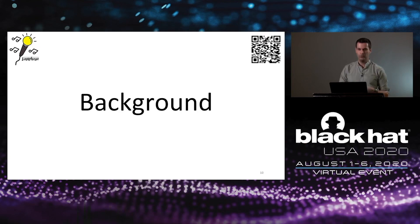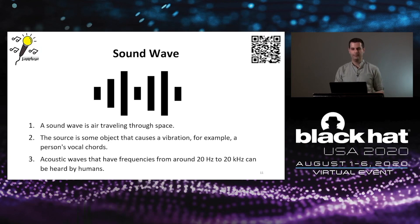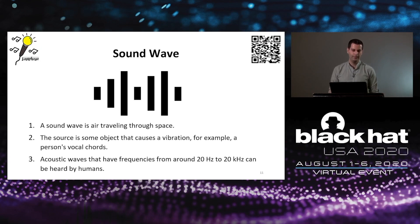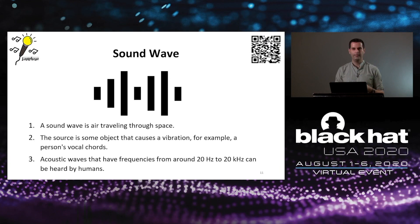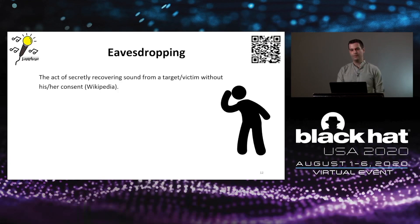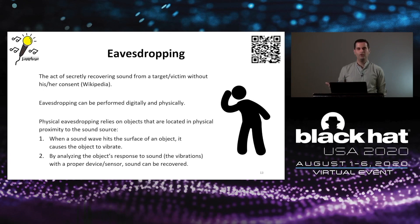Let's discuss the necessary background to understand LAMPHONE, starting with sound waves. Sound is basically air traveling through space whose source can be an object that causes vibration, for example, a person's vocal cords. Acoustic waves with frequencies from around 20 Hz to 20 kHz can be heard by humans. This leads us to eavesdropping, which according to Wikipedia is the act of secretly recovering sound from a target without its consent, and comes in both digital and physical forms.